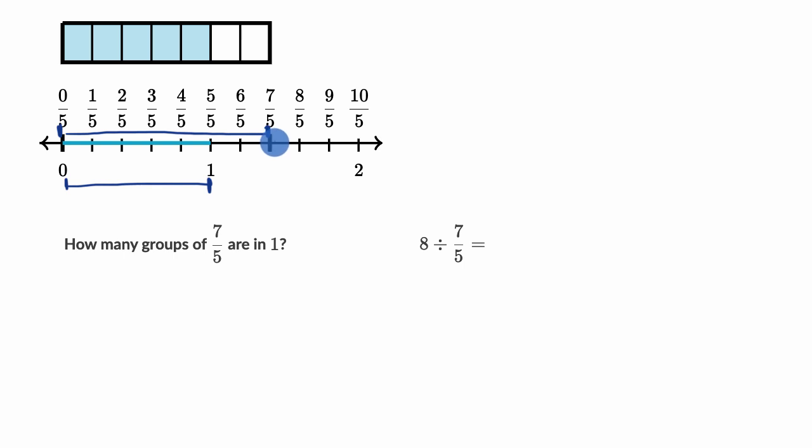So it's actually going to be a fraction of a seven-fifth that is one, or that is in one. And you can see what that fraction is. One is what fraction of seven-fifths? Well, if you look at the fifths, seven-fifths is, of course, seven of them, and a whole is five-fifths. So five of the seven-fifths make a whole, so the answer right over here is five-sevenths.